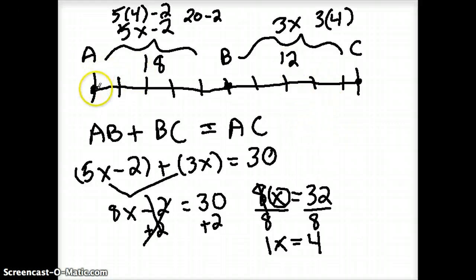And I knew that the total distance from A all the way over to C was 30. Well, 18 plus 12 does give me 30. So it all checks out.